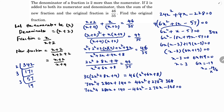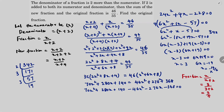The fraction is x by x plus 2. Substituting x equals 3: 3 by 3 plus 2 equals 3 by 5. So the original fraction is 3/5.